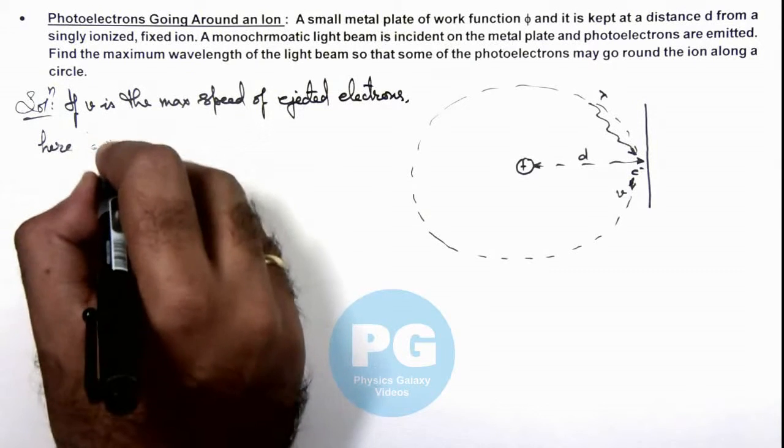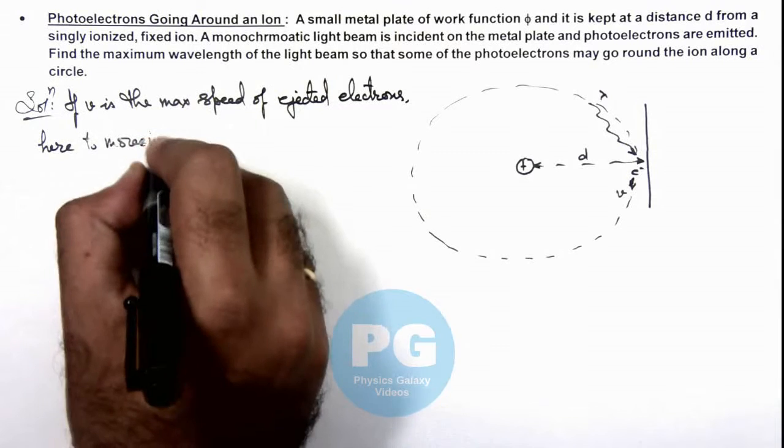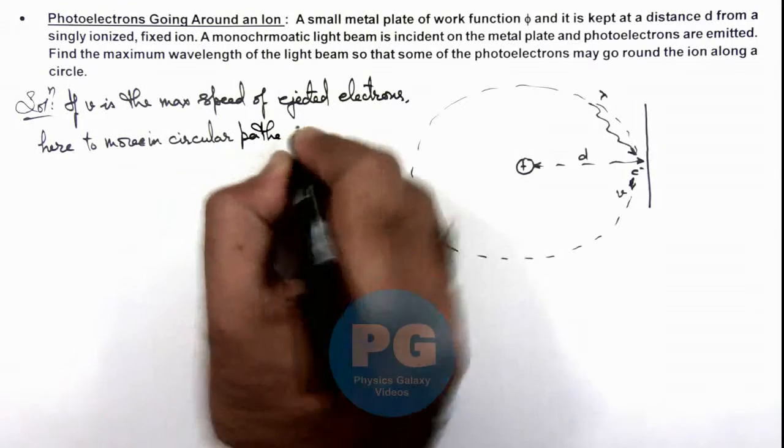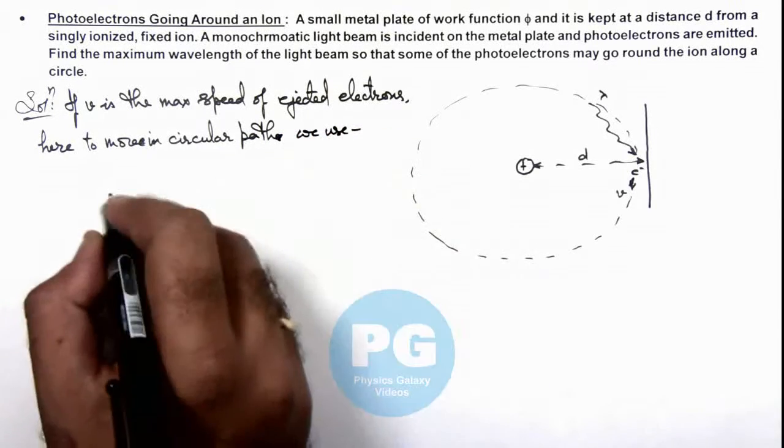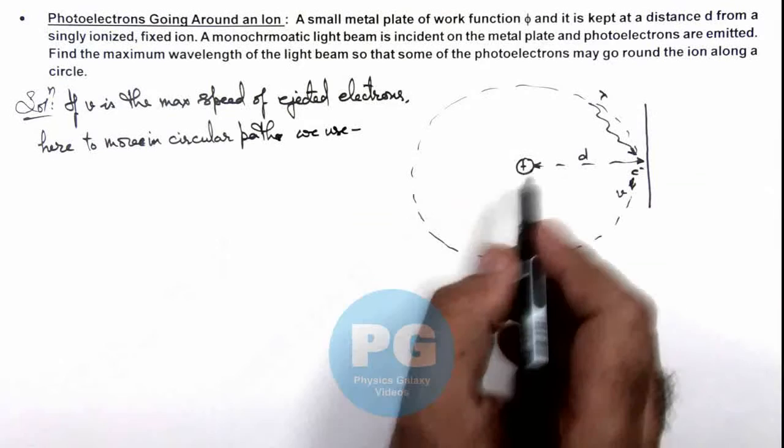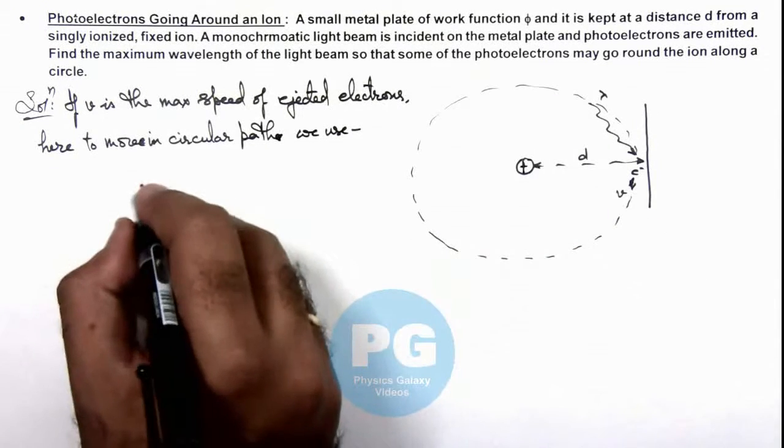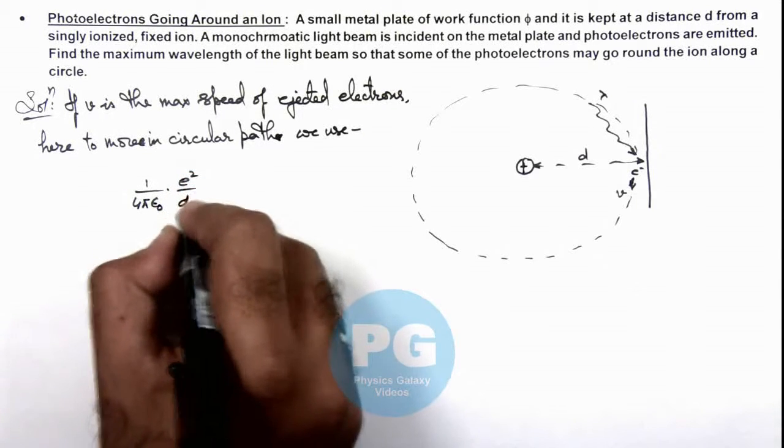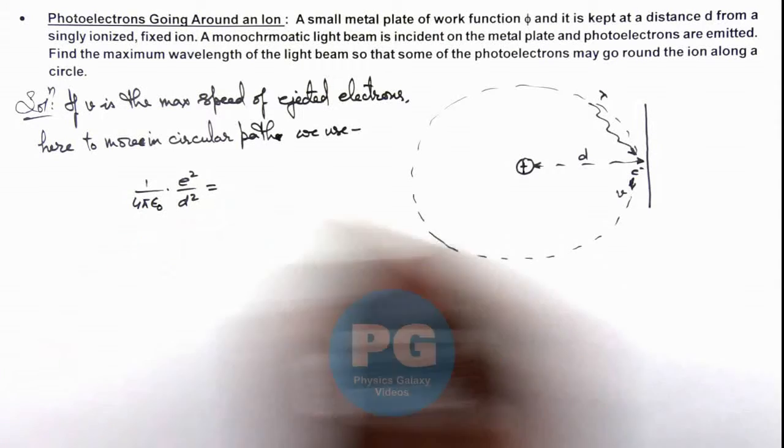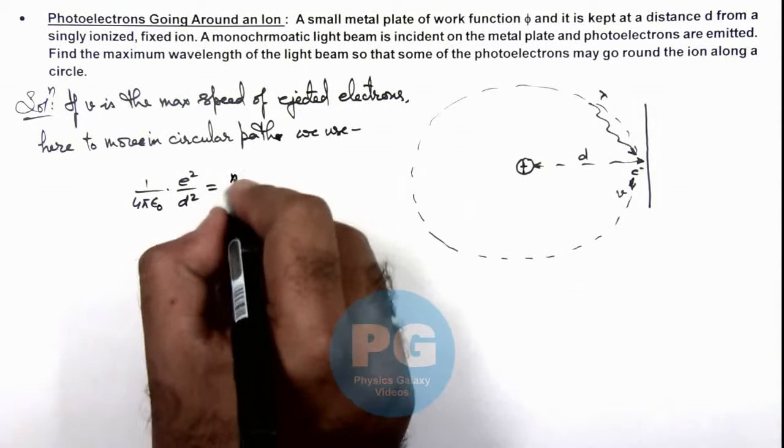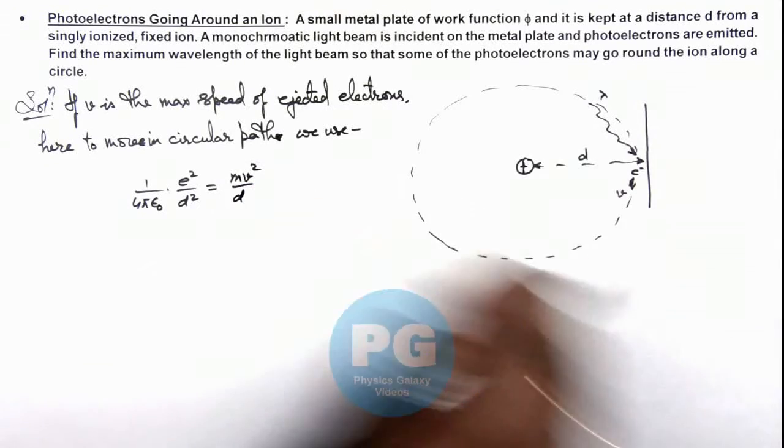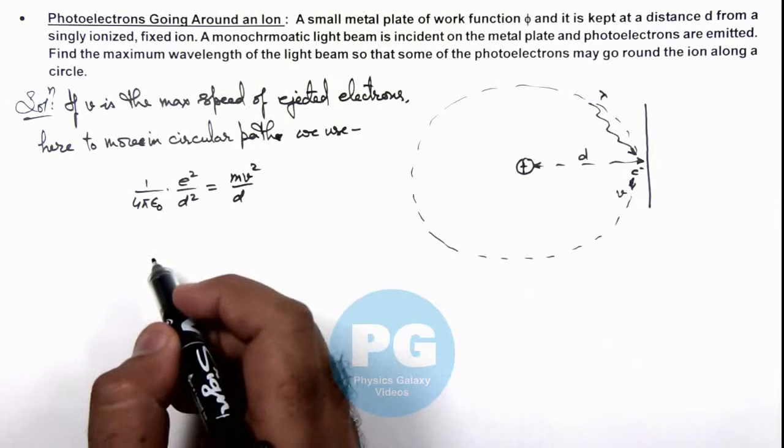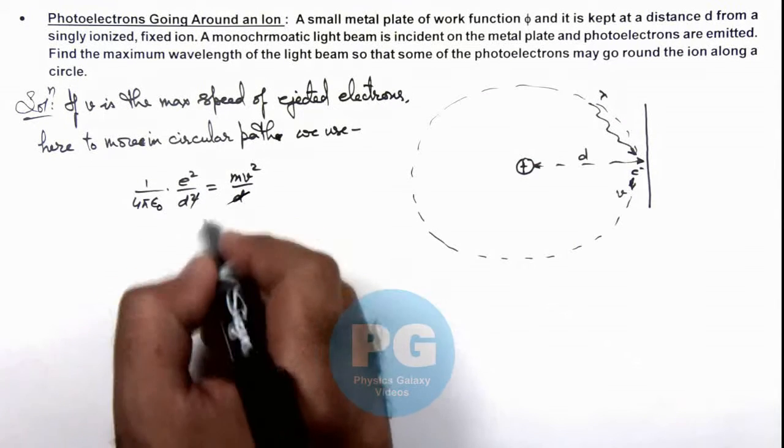To move in circular path, we use the electrostatic force due to the ion charge on it, which can be given as 1 by 4 pi epsilon not, e square by d square, and that should be equal to the centripetal force on it, which is m v square by d, as these will be revolving in a circle of radius d if these electrons are ejected tangentially to the plate. So in this situation one d gets cancelled out.